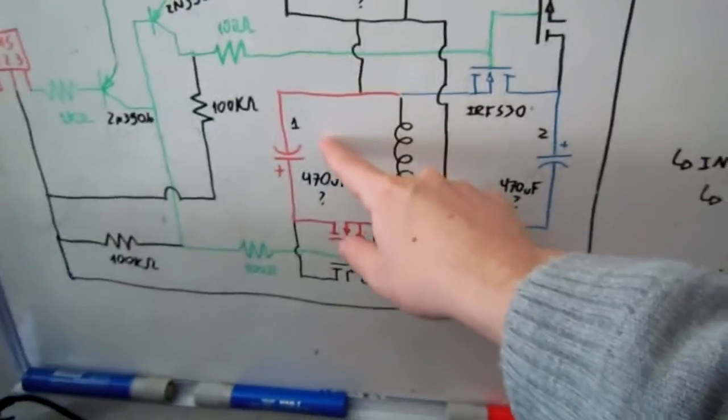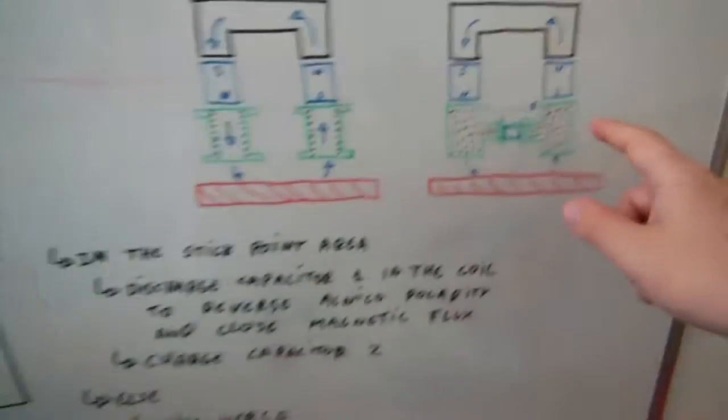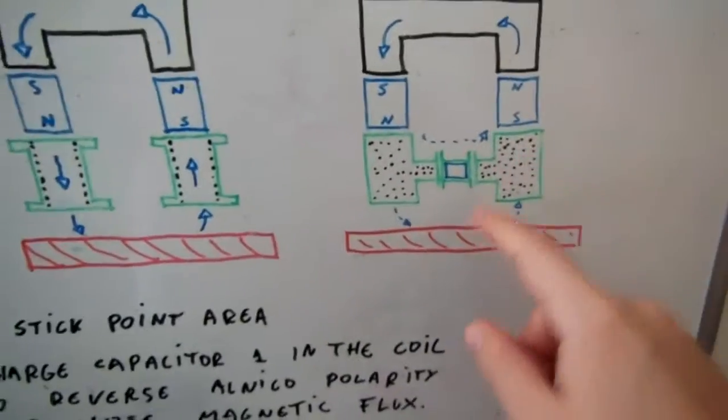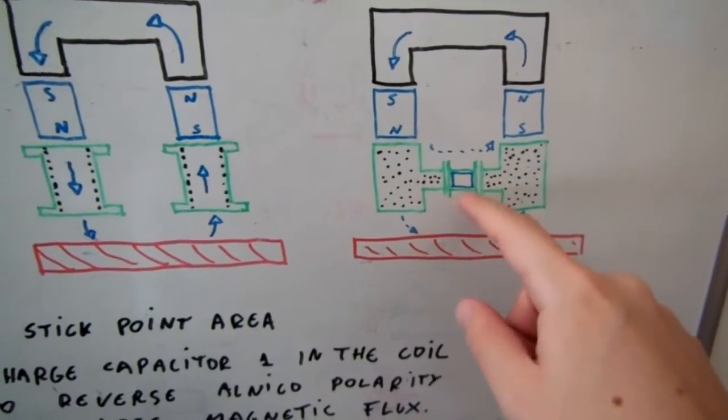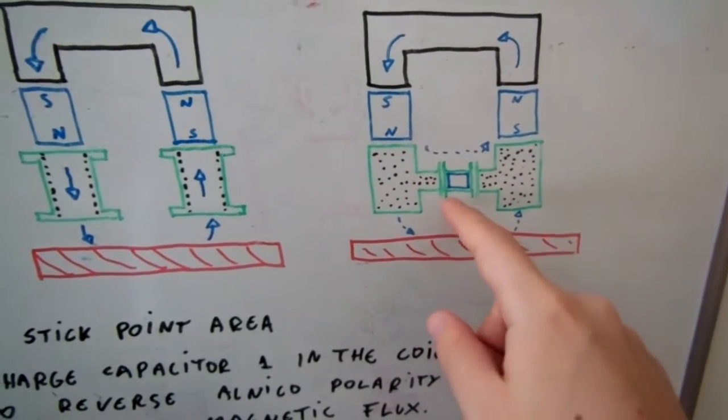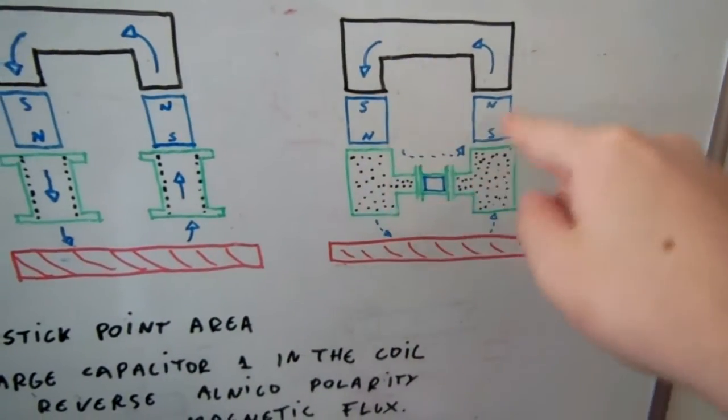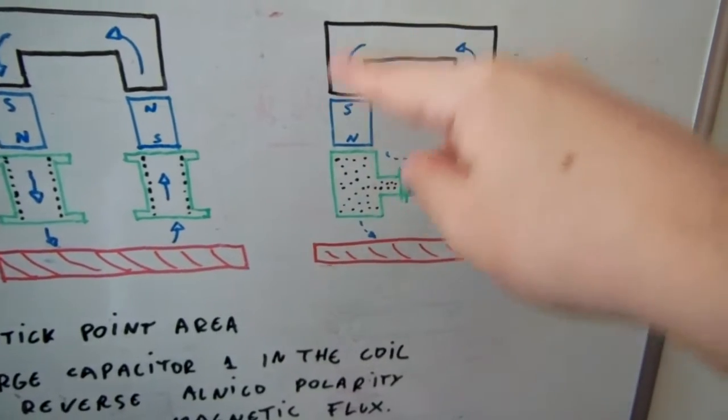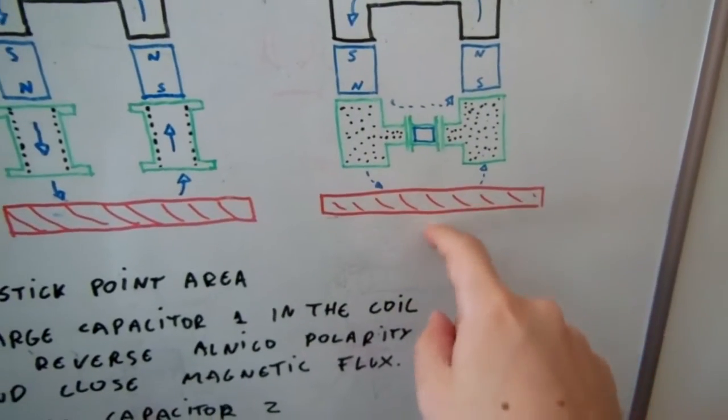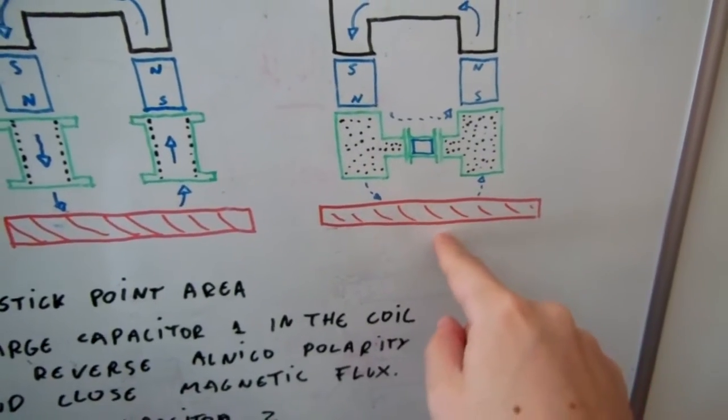So this one is capacitor one and when I discharge here, the polarity of the Alnico will switch to close this path so the flux will pass to here instead of going to the rotor.